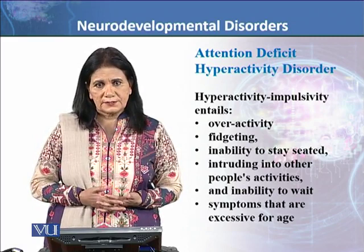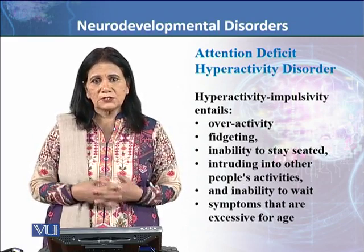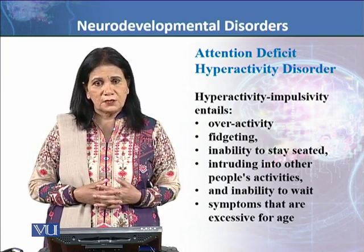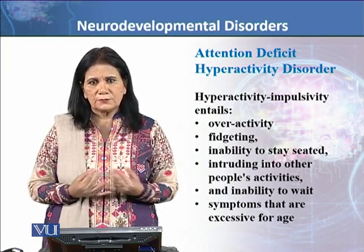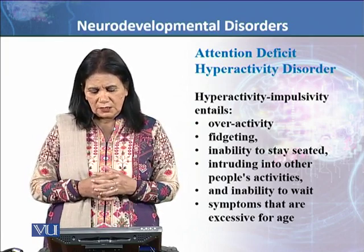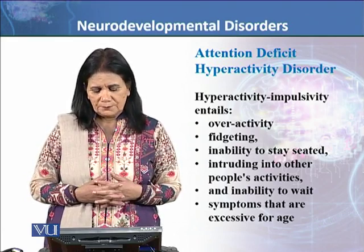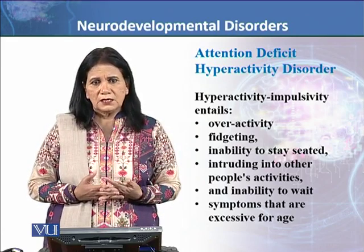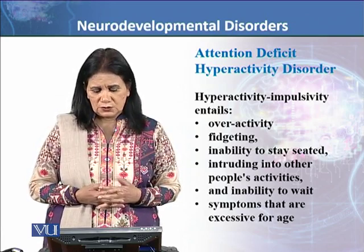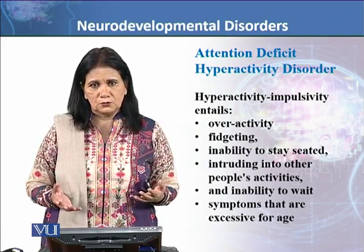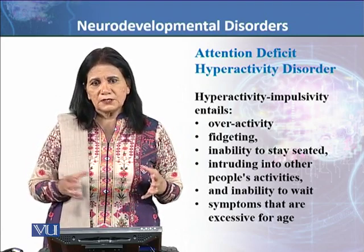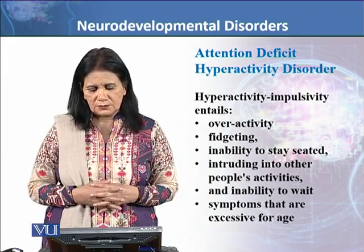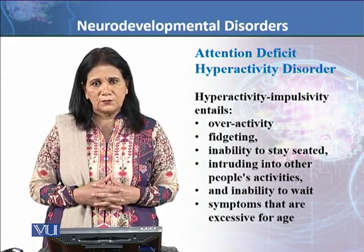Hyperactivity and Impulsivity, which is the second feature, entails overactivity — बहुत ज़्यादा active नजर आता है यह बच्चा। And fidgeting — fidgeting with fingers, with nails — showing anxiety। Overanxious है बच्चा। Inability to stay seated, and particularly structured environment में इसका बड़ा मसला आता है। School environment में इस बच्चे को settle या adjust होने में मुश्किल होती है, क्योंकि वहाँ attention की भी ज़रूरत होती है और activity को भी maintained level पर रखना होता है।